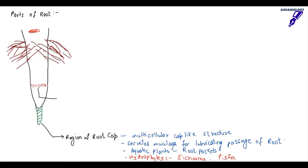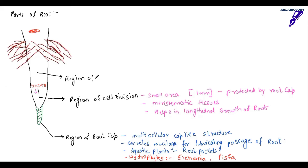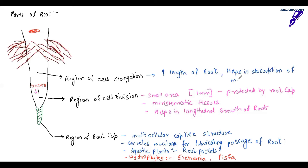Examples of aquatic plants without root caps include hydrophytes, Eichornia, and Pistia. The region of cell division is also called the meristematic region — it is a small area of about one millimeter, protected by the root cap. Here cells are dividing continuously, which helps in longitudinal growth of the root. The region of cell elongation increases the length of the root and helps in the absorption of minerals.